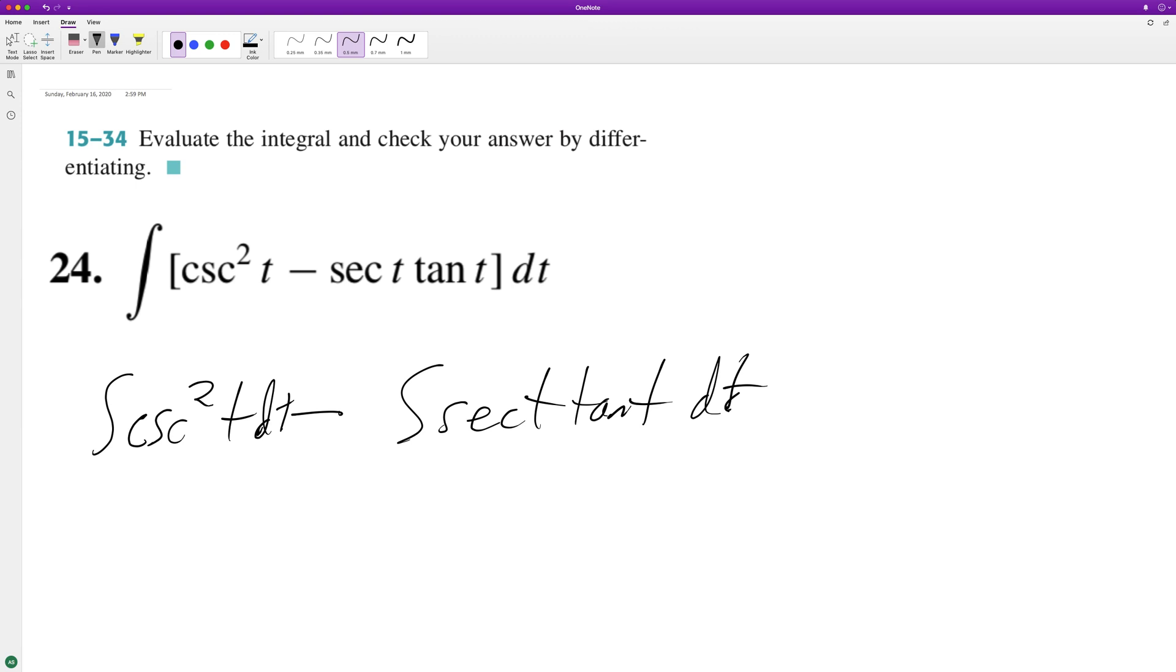The integral of cosecant squared is negative cotangent t, and then the integral of secant tangent tangent t is equal to secant t. And then we need to add our generic constant in the inner integral when we integrate.